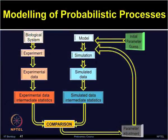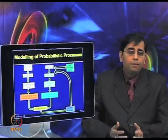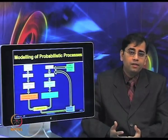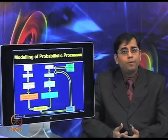The modeling of probabilistic processes involves performing experiments on a biological system to generate experimental data sets, from which statistics can be applied for comparison. Different types of models can be generated using simulations, and by comparing simulation data with experimental data and adjusting parameters, one can study the systems and derive probabilistic processes.